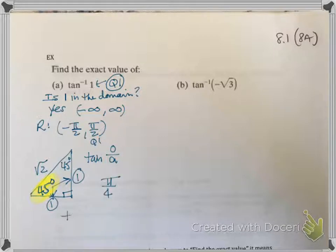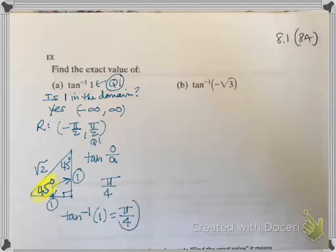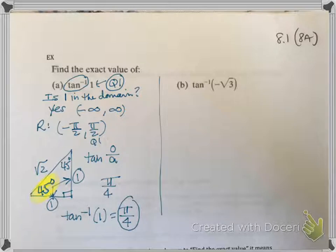45 degrees in radians is pi over 4. So the answer — what is the inverse tangent of the value 1? — is the angle pi over 4. Inverse tangent, or any inverse function, answers the question: what angle do I get when I have this value?